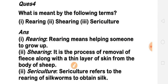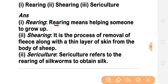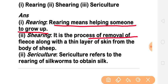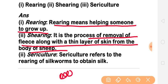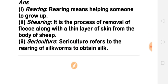Next question: what is meant by the following terms? Rearing means helping someone to grow up. Shearing means the process of removal of fleece along with a thin layer of skin from the body of the sheep — the hairs and the skin layer together. This process is called shearing.